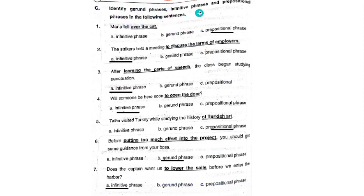Identify gerund phrases, infinitive phrases, and prepositional phrases in the following sentences. (1) 'Maria fell over the cat.' Answer: C — Prepositional phrase. (2) 'The strikers held a meeting to discuss the terms of employers.' Answer: A — Infinitive phrase.